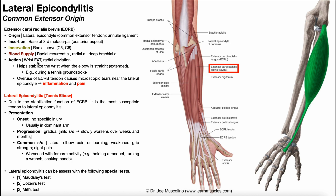You can selectively extend your third digit by contracting the ECRB. This muscle also participates in radial deviation. Later on, we'll see that the special tests for lateral epicondylitis take advantage of these actions by either putting tension on the common extensor tendon through tension in the muscle, or just a direct stretch on the tendon in order to provoke symptoms to help us rule up this condition.